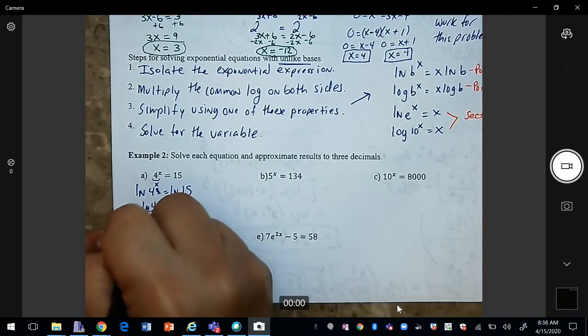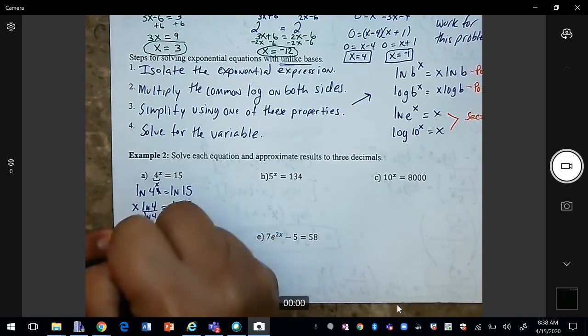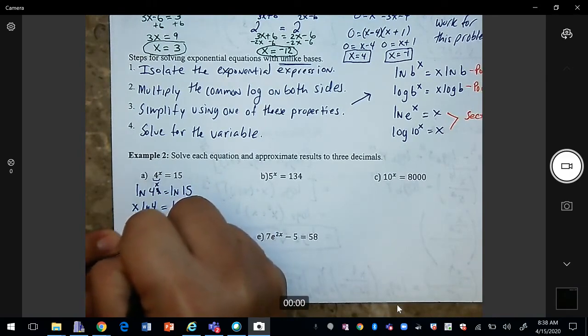Divide by natural log of 4. So we get x will be approximately.